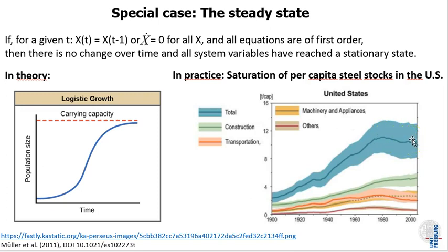So when we have such a saturation phenomenon we can say that there is no more change over time, the per capita stocks stay constant, and then we would call the system a stationary system or we say the system has reached a stationary state.